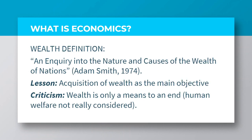We start with the definition by Adam Smith. We want to categorize the definitions of economics in terms of wealth, welfare, and growth. Adam Smith, also known as the father of economics, defined economics as an inquiry into the nature and causes of the wealth of nations. This definition was actually the title of his book. The lesson in this definition is that Adam Smith considered the acquisition of wealth as the main objective of human activity. However, wealth is only seen as a means to an end, and thus Smith was seen to have failed to consider or capture human welfare in this definition.